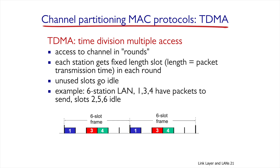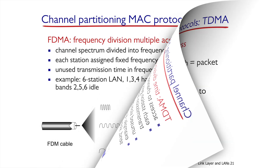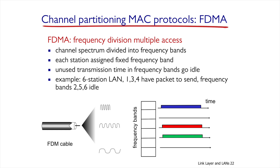The upside shared by all protocols of the first class is that collisions cannot happen and the protocol is very simple. The second example of the first class is Frequency Division Multiple Access, or FDMA. Each node receives its own frequency through which it can transmit. Like in the previous example with six nodes, the first, third, and fourth have a packet to transmit, while the second, fifth, and sixth do not. Like before, the bandwidth is wasted, but unlike TDMA, there is no channel access delay.